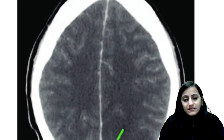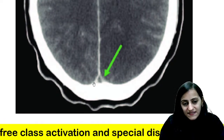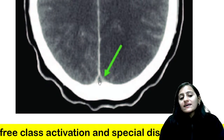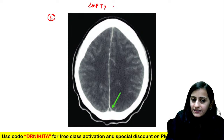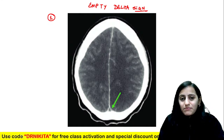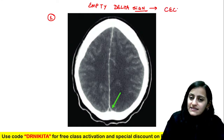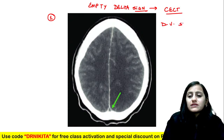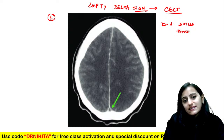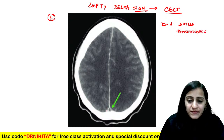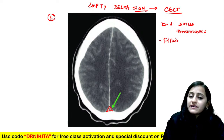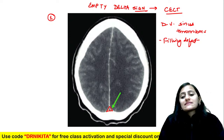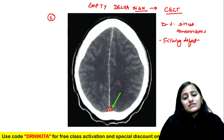On this contrast-enhanced CT, we see a triangle — delta — and that delta is empty. This is called the empty delta sign. The empty delta sign is seen on contrast-enhanced CT in cases of dural venous sinus thrombosis. Only the wall enhances because of the thrombus, creating a filling defect in the dural venous sinus.